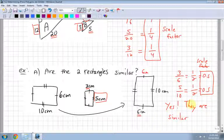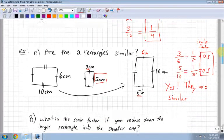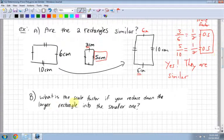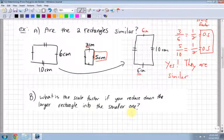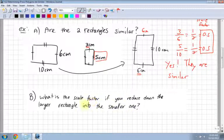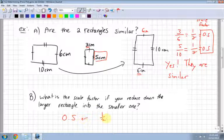And how do I know? How do I know that they're similar? Because my scale factors are the same. Right. Good. OK. It says, what is the scale factor if you reduce one down to the larger rectangle into the smaller one? We found that. That was 0.5, right? Or one half. So it's been reduced, and I figured out that the reducing was by 0.5 or a half.